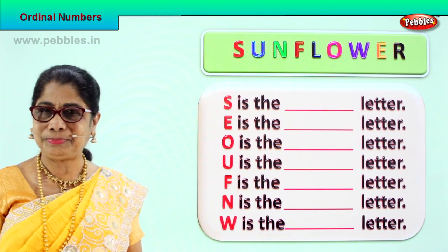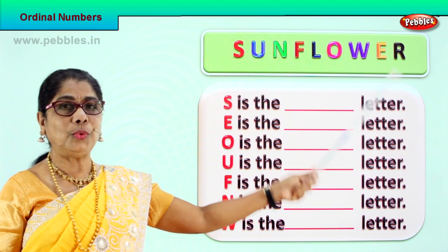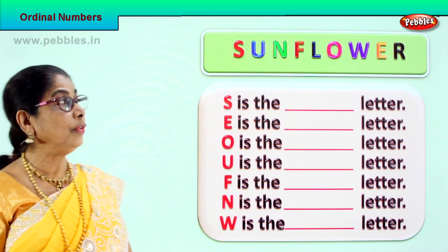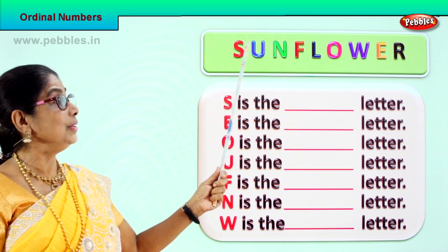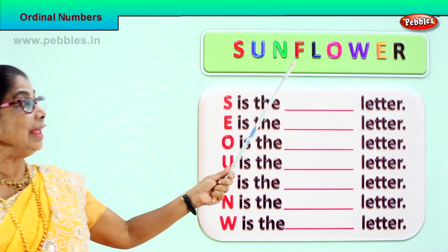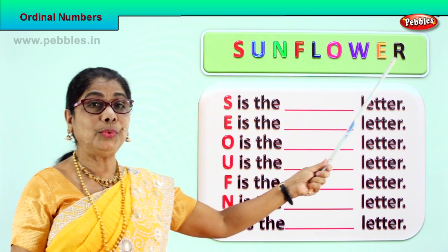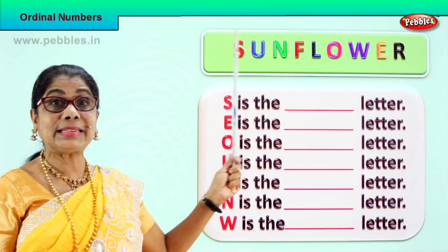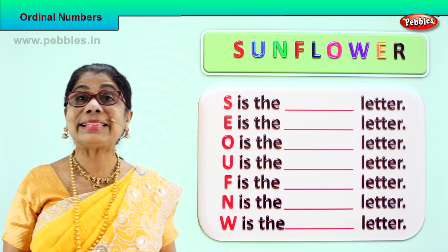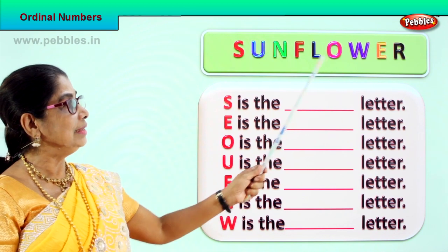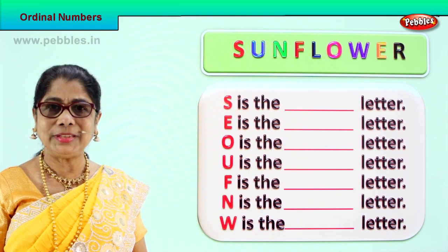Look what we have here. Here we have a single beautiful word. Can you read the word for me? You have sun, S-U-N. Sun. Next — flower, F-L-O-W-E-R. Flower. Sunflower. What do you have on the top here? Sunflower. Now each of these letters of the sunflower...